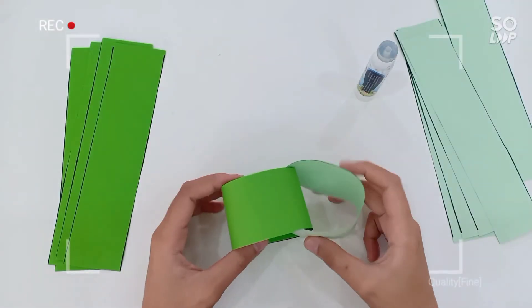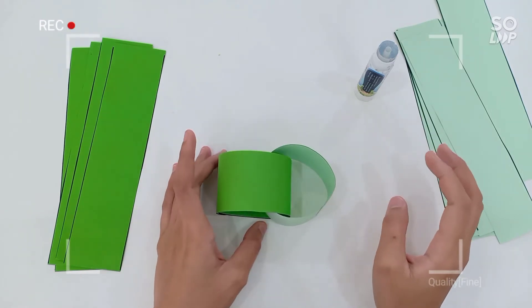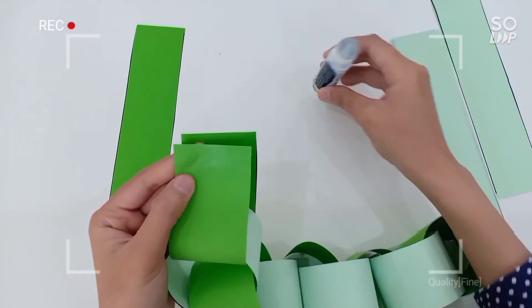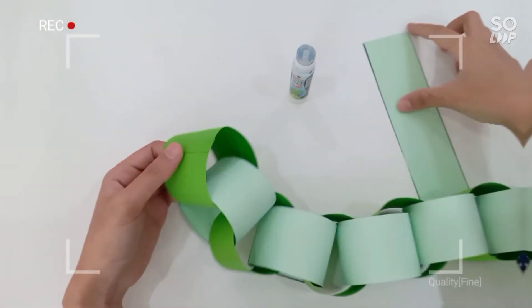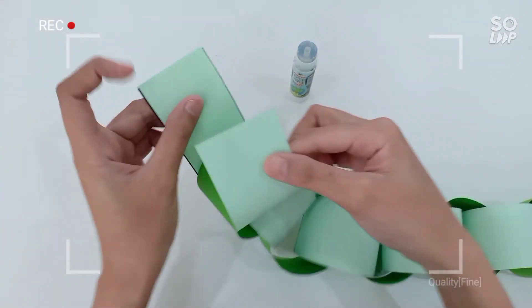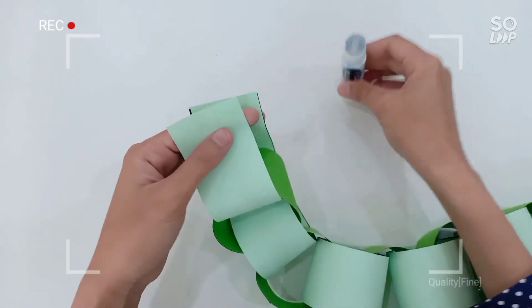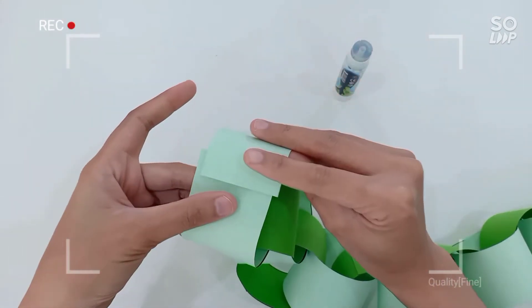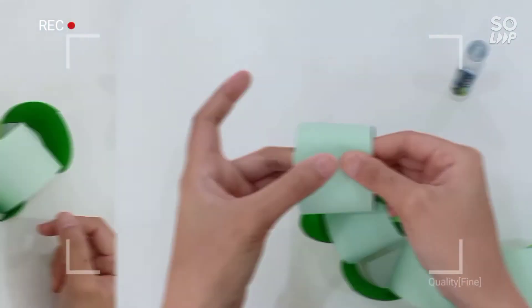Okay I'm gonna keep doing this as long as I want my snake to be. Here's the last one, just go through the circle, put some glue and stick it just like this.